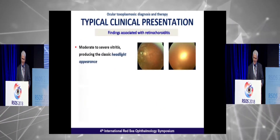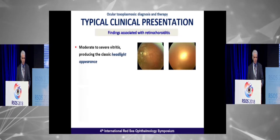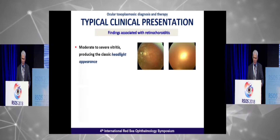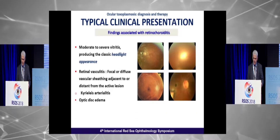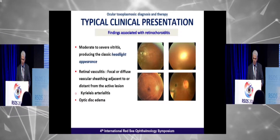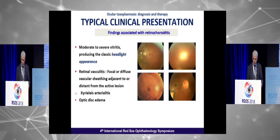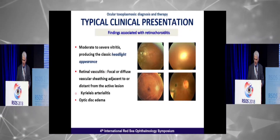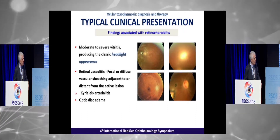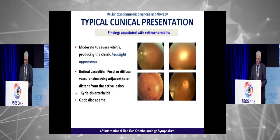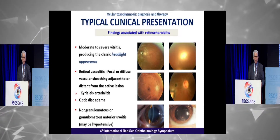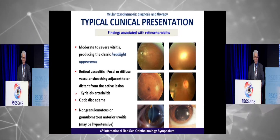Findings associated with retinochoroiditis include moderate to severe vitritis. In cases of severe vitritis, you may see the classic headlight-in-the-fog appearance. Retinal vasculitis may be focal or diffuse, with vascular sheathing adjacent to or distant from the active lesions — what we call Kyrieleis arteriolitis, which is typical for Toxoplasmosis. There may also be optic disc edema, and association with anterior uveitis is not uncommon.